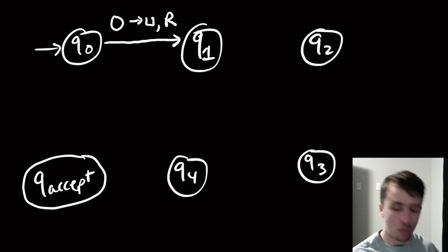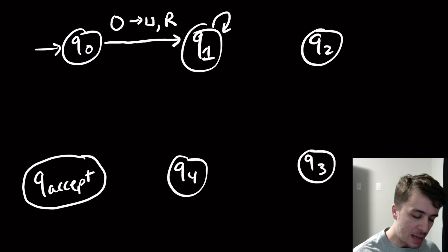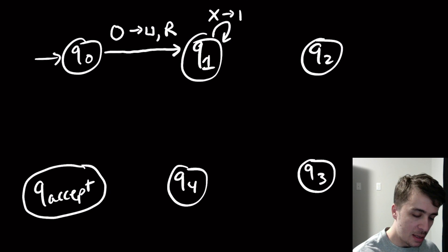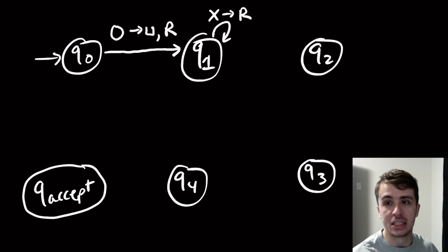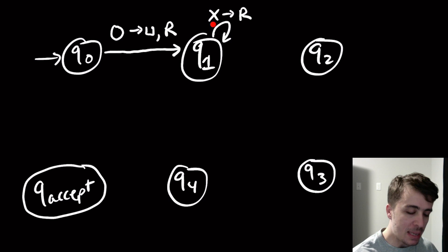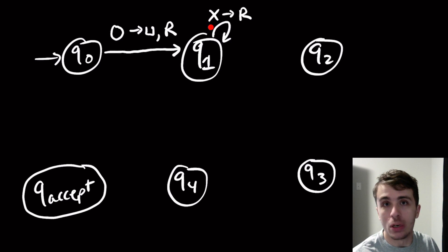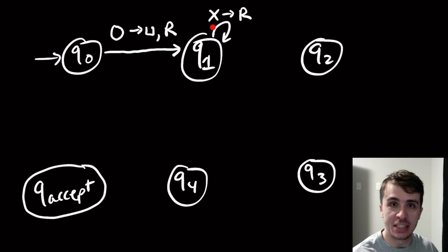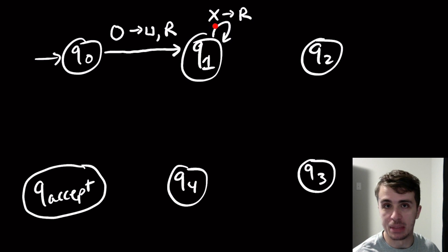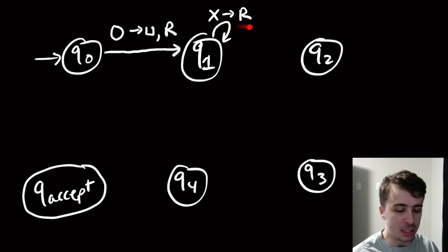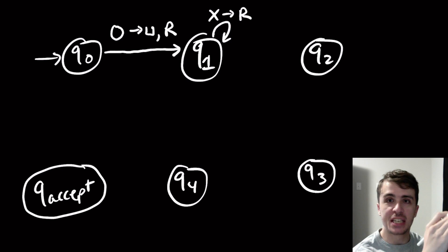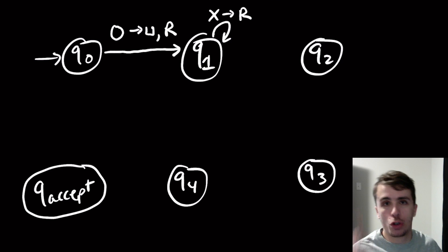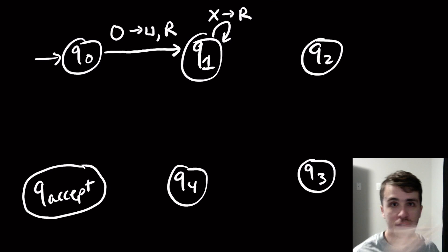We're also going to have a self-loop which is a transition that means: if we see an x on the tape, we write an x into that cell — we're not changing its contents — and we move right. So in some sense what this transition is doing is: if you see an x, skip over it. You are writing an x there but you are effectively just skipping over it.